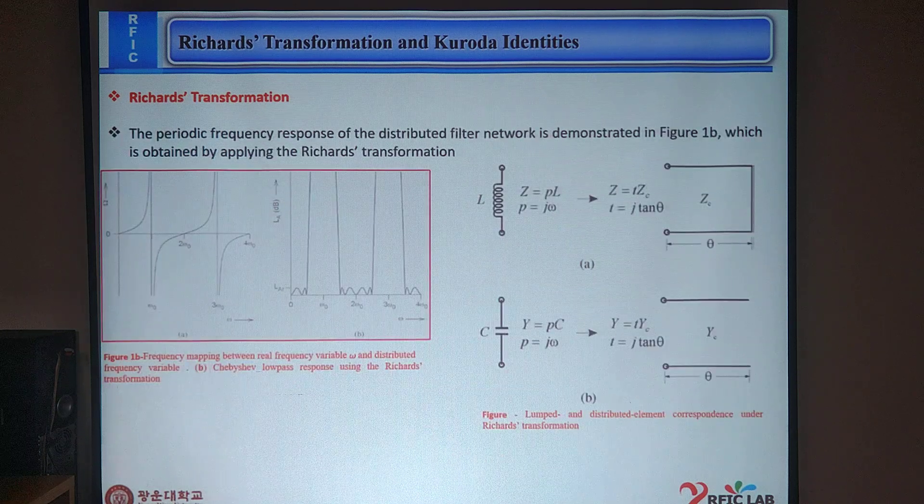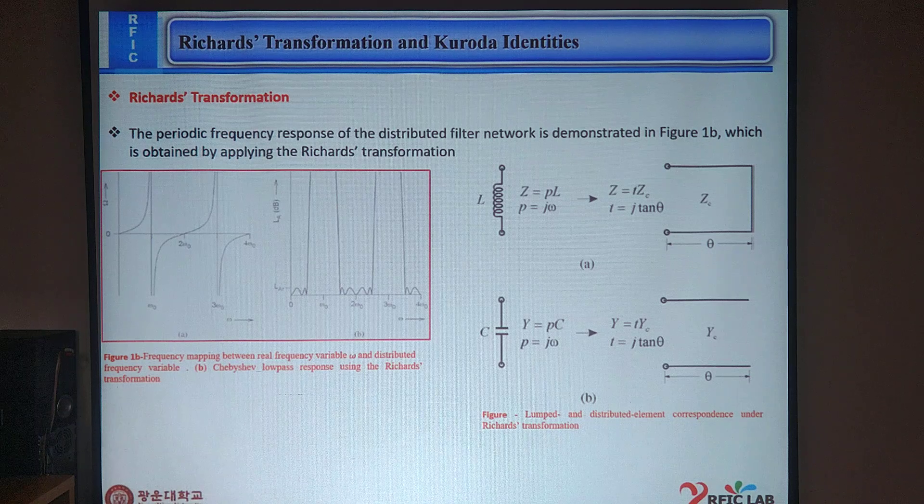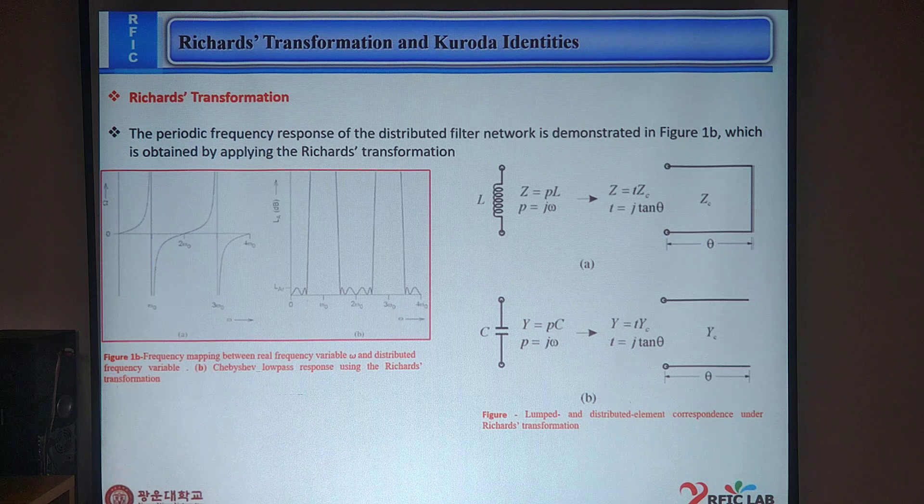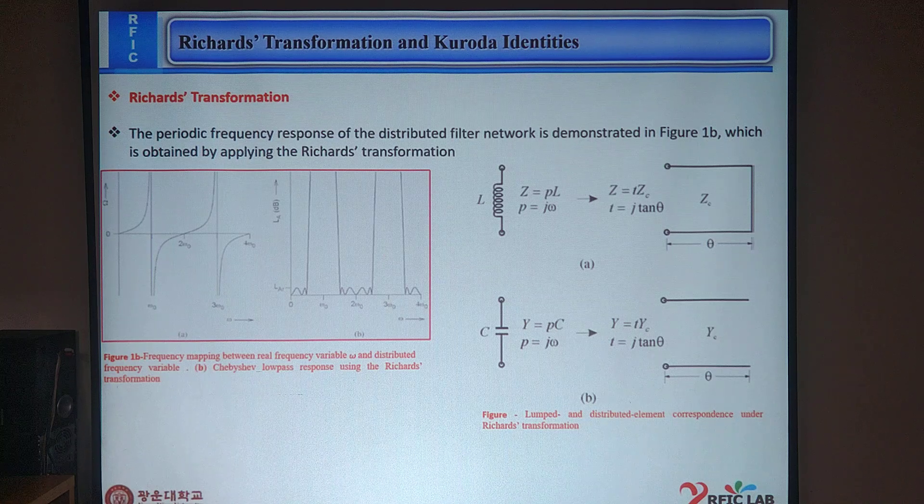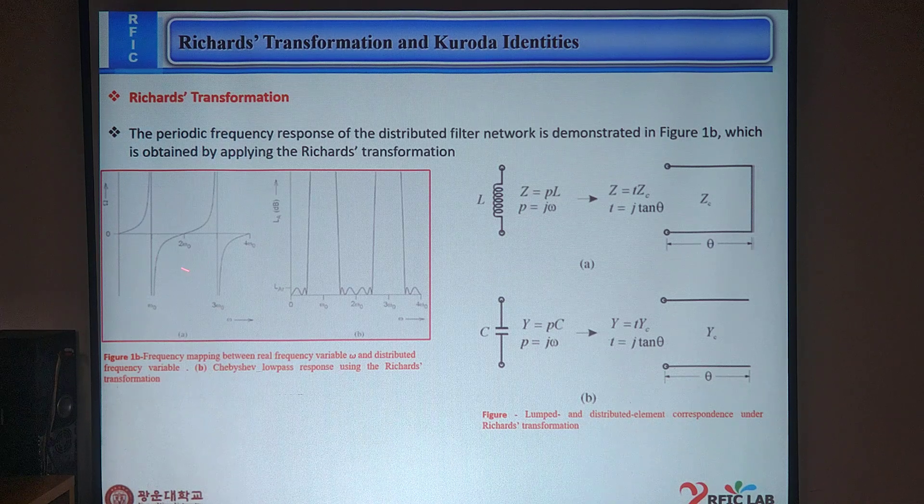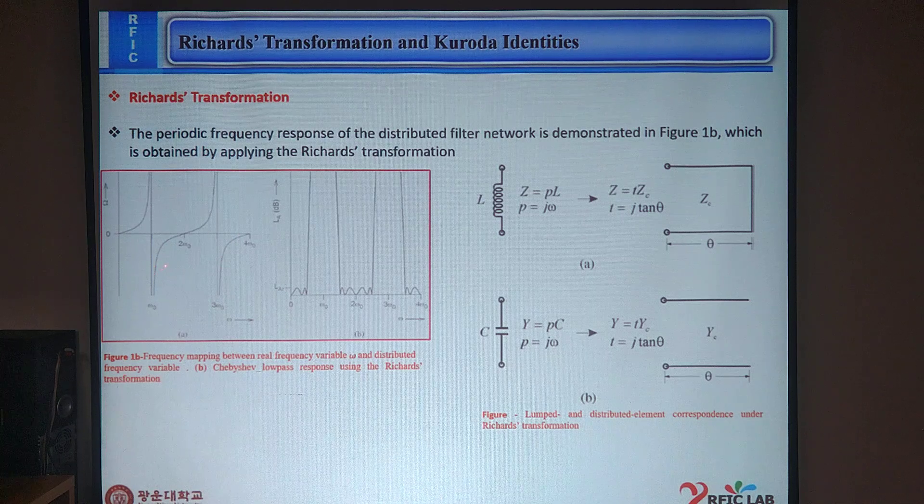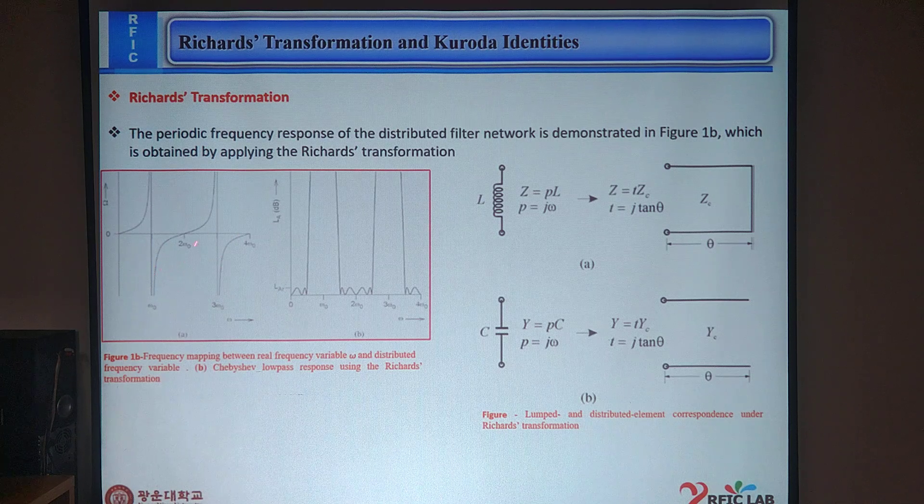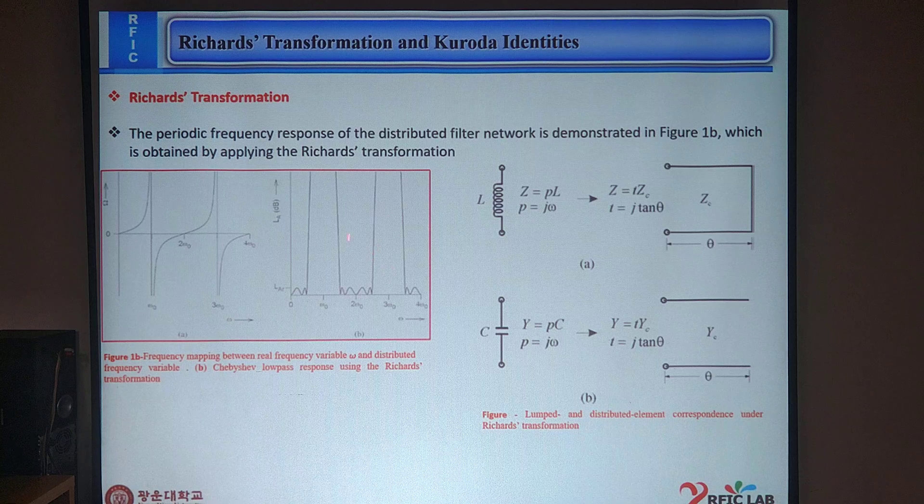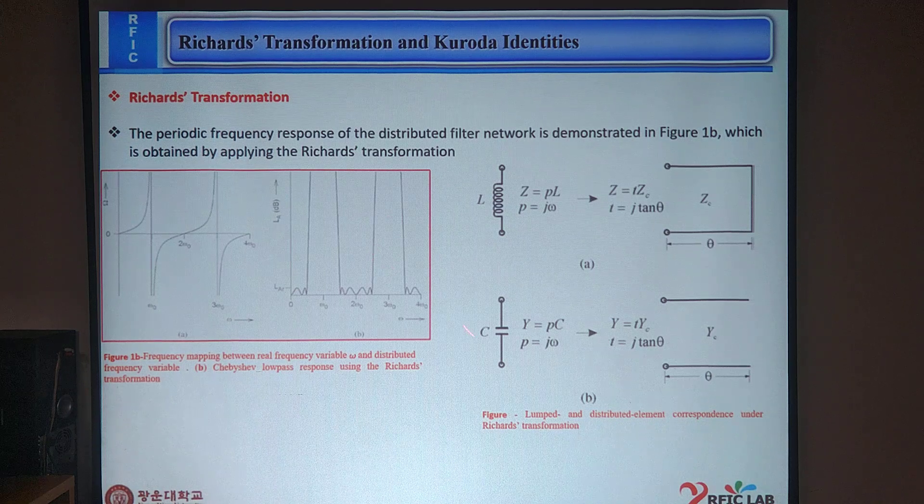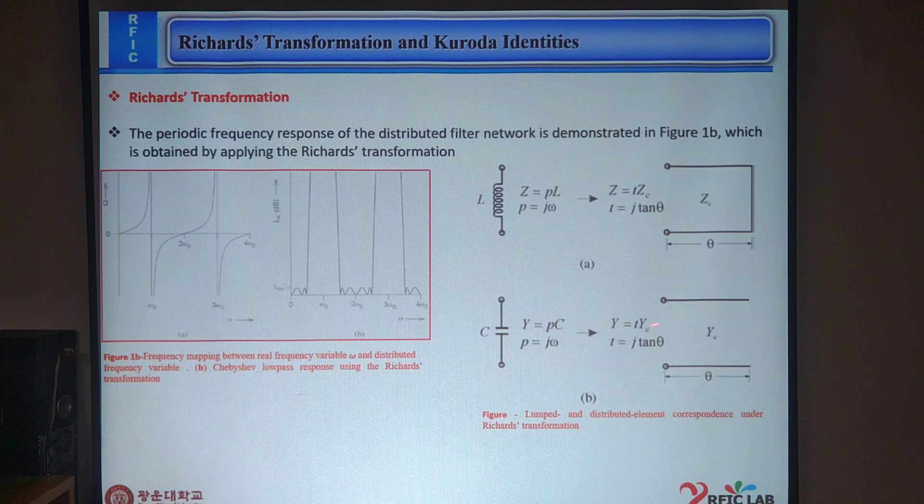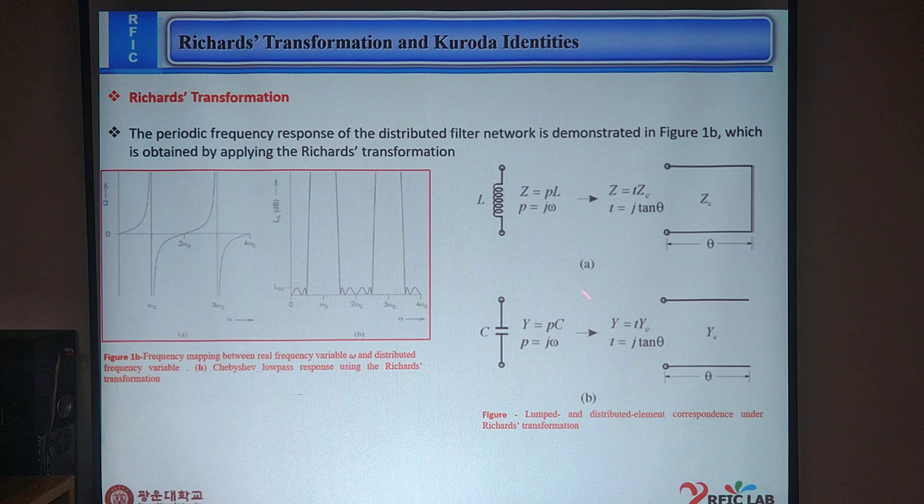Our next point is Richard transformation. The periodic frequency response of the distributed filter network is demonstrated in Figure 1B. Here we can see Figure 1B which is obtained by applying the Richard transformation. Here we can see this is a frequency mapping between the frequency variable and the distributed frequency variable, and applying the Chebyshev low-pass response using the Richard transformation. Here we can see the lumped and distributed element correspondence under the Richard transformation in Figure A and Figure B.